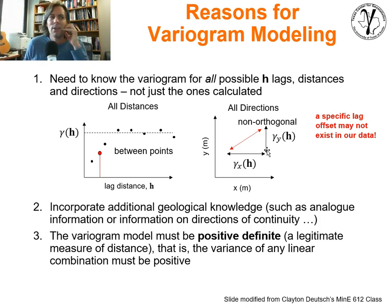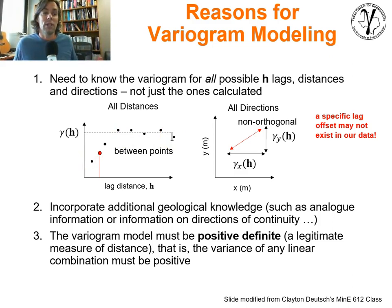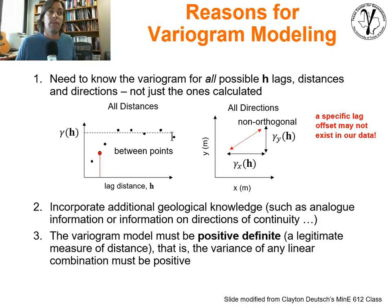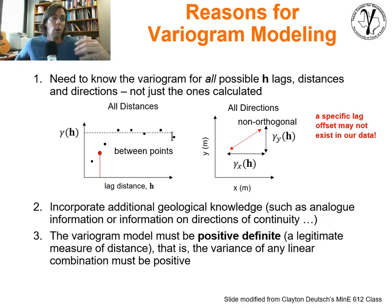Modeling is not just about curve fitting. There's an opportunity here to bring in our geo-knowledge. We may have a set of experimental variogram points from our calculation, but in addition, maybe we have understanding about anisotropy ratios that comes directly from outcrop geology or from high-resolution seismic information. We want to bring that into the model. This is a perfect opportunity — bring your geo-interpretations, geophysical interpretations, all of it into the variogram modeling step.